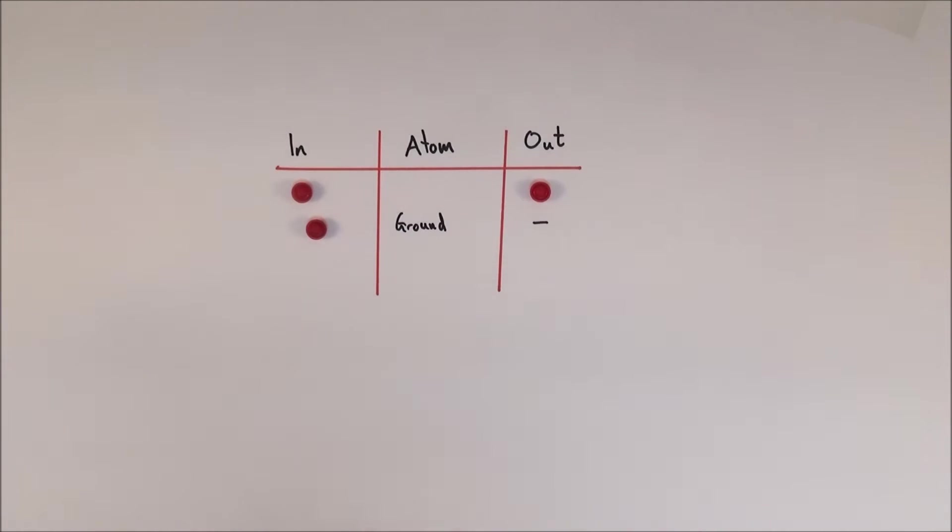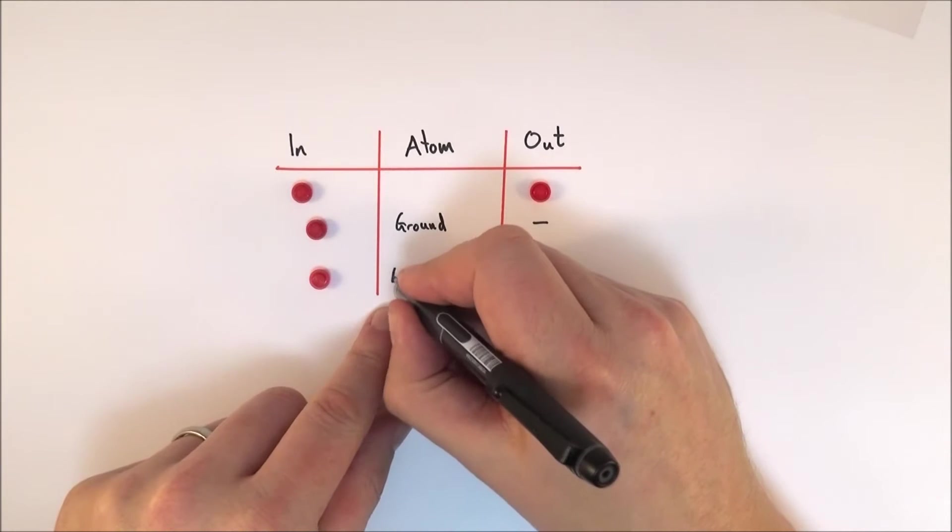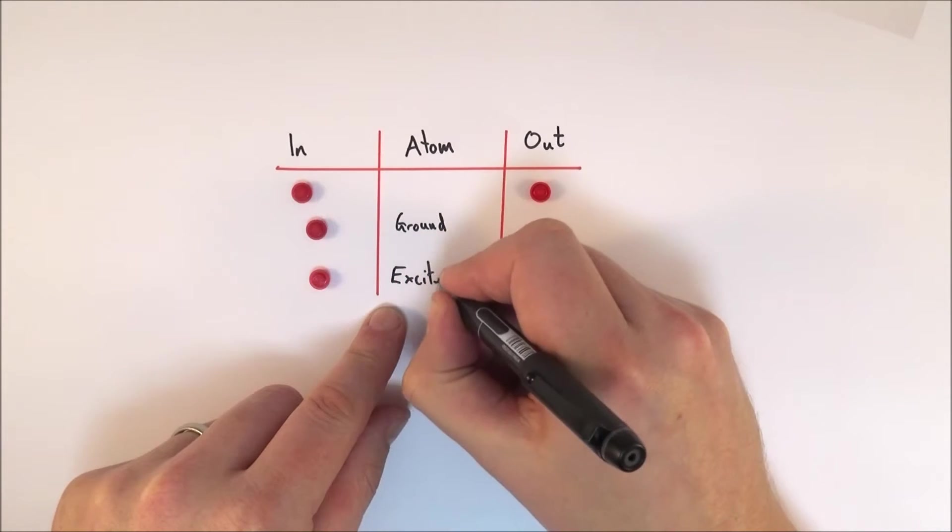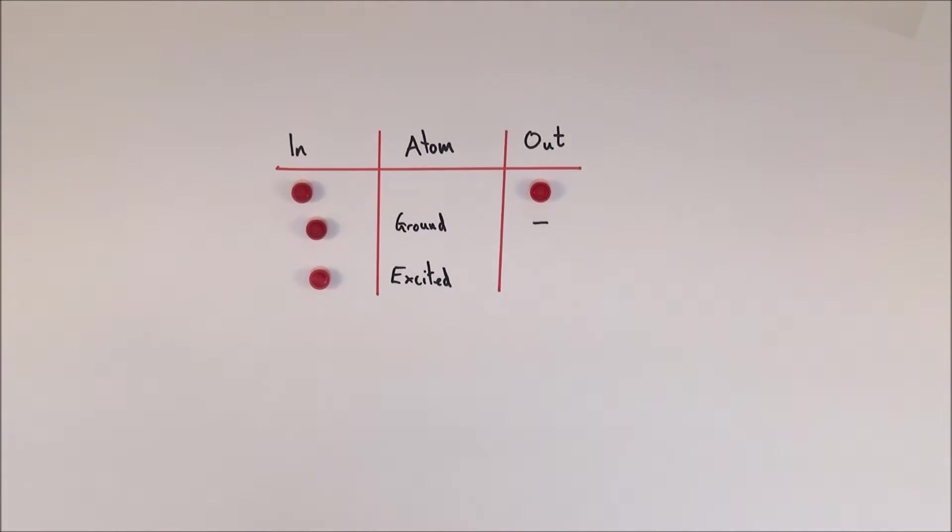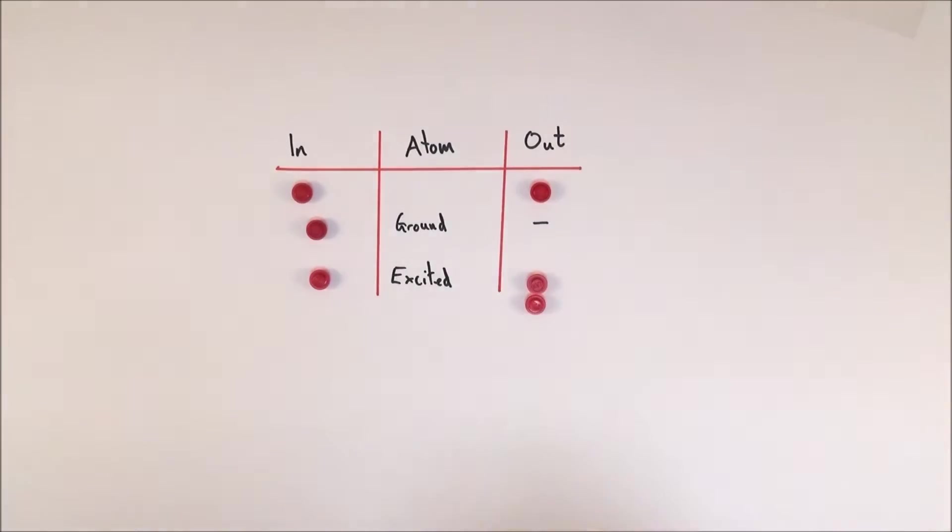Now the third thing that we've just seen is this stimulated emission where one photon comes in, it hits an atom which is excited, and then you get two photons out. So basically you can have two photons out, one photon out, or nothing.